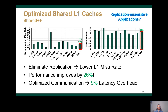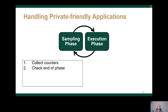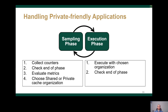But what about replication-insensitive applications? Some applications may have affinity towards the private L1 cache organization and may suffer under a shared L1 cache organization. Therefore, we need a mechanism to identify these applications and execute them under private L1 caches. We achieved that using our proposed dynamic scheme, which alternates between an assembling phase and an execution phase. Under the assembling phase, we collect counters to help identify the preferred cache organization. Once we reach the assembling phase end, we utilize the collected counters to evaluate the required metrics and choose between shared or private L1 caches. Then we start executing under the selected cache organization until the end of the execution phase.